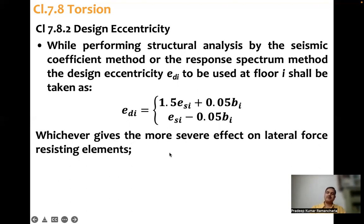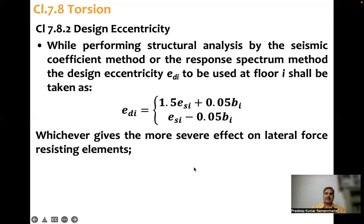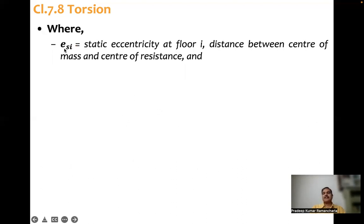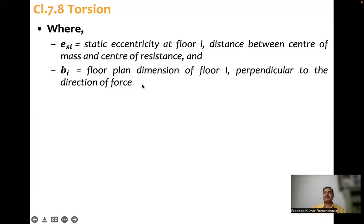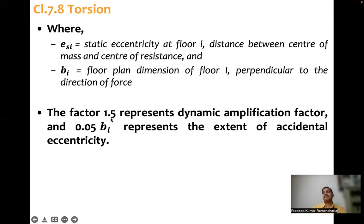Whichever equation gives the more severe effect should be taken into consideration in design. Static eccentricity ESi is the distance between center of mass and center of resistance. Bi is the floor plan dimension of floor i perpendicular to the direction of force. The factor 1.5 represents the dynamic amplification factor, and 0.05 Bi represents the extent of accidental eccentricity.